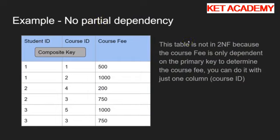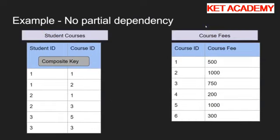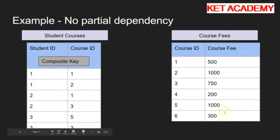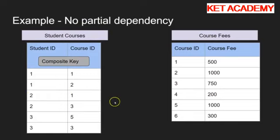So what do we do to fix this? Nice and simple - all we do is remove this information to a separate table. We have a table about course fees where each course ID has a course fee attached: course 1 is 500, course 2 is 1,000, etc. The other table we keep almost the same but we get rid of the course fee column and only have the student ID and the corresponding course ID. So student 1 is doing course 1, student 1 is also doing course 2, student 2 is doing course 1 and course 3, etc. That is second normal form - no partial dependency.